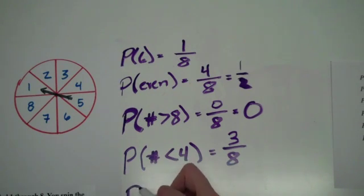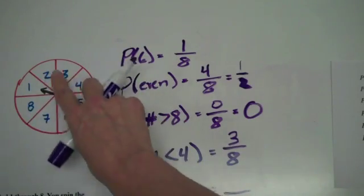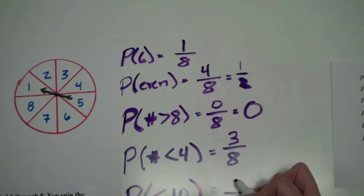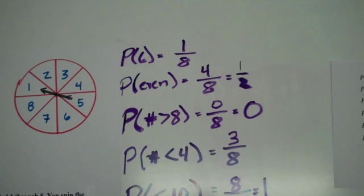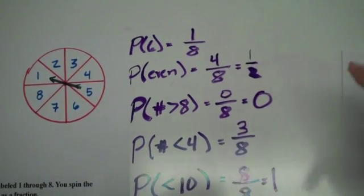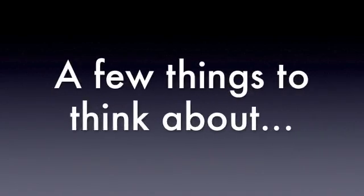The last one is the probability of a number that is less than ten. We have eight possible outcomes, and all of these numbers are less than ten — all eight of them. So you have an eight out of eight chance, which means the probability is one. This translates to: a probability of zero means this is never going to happen, and a probability of one means this is always going to happen.